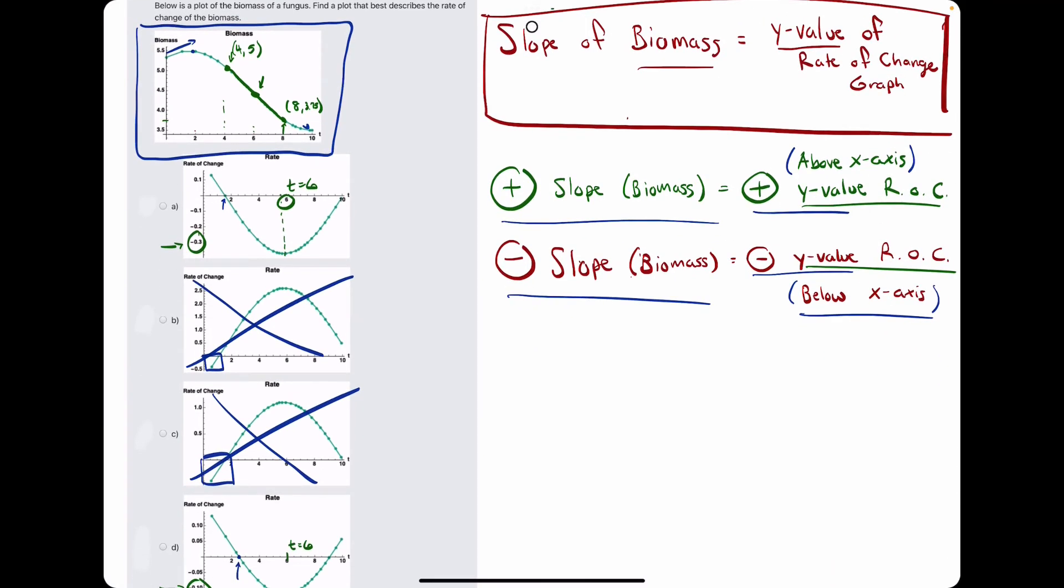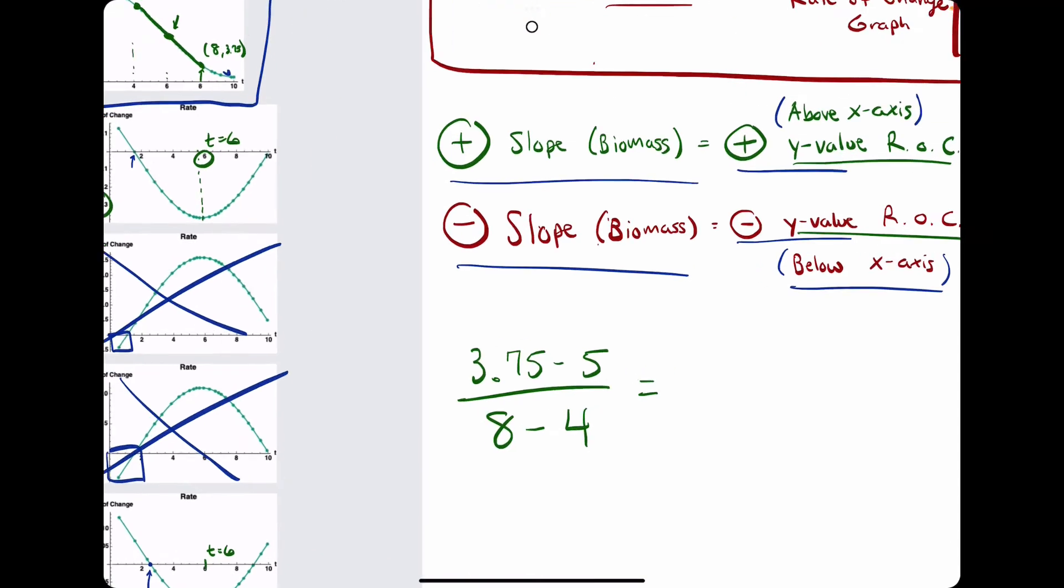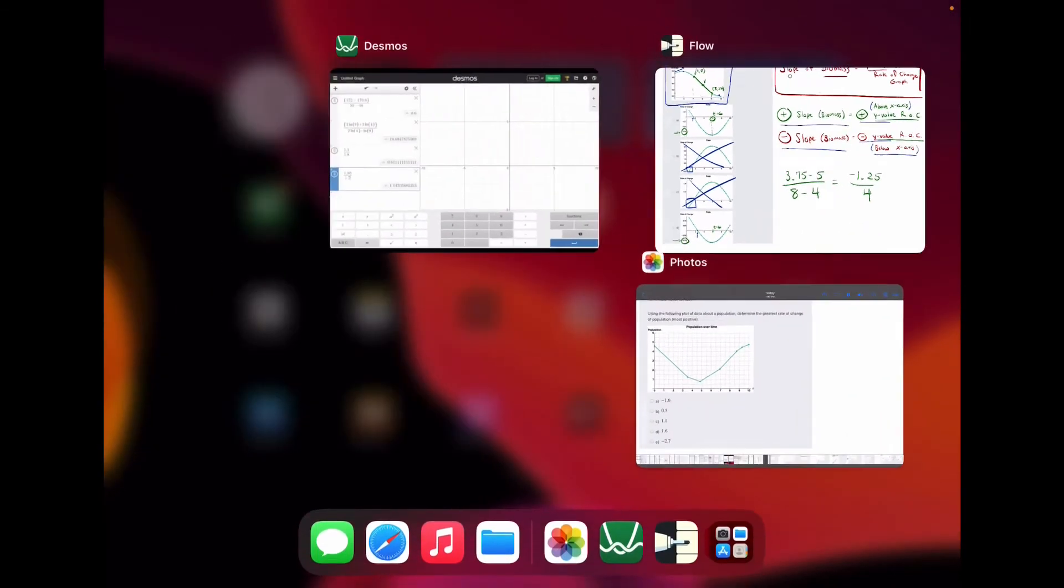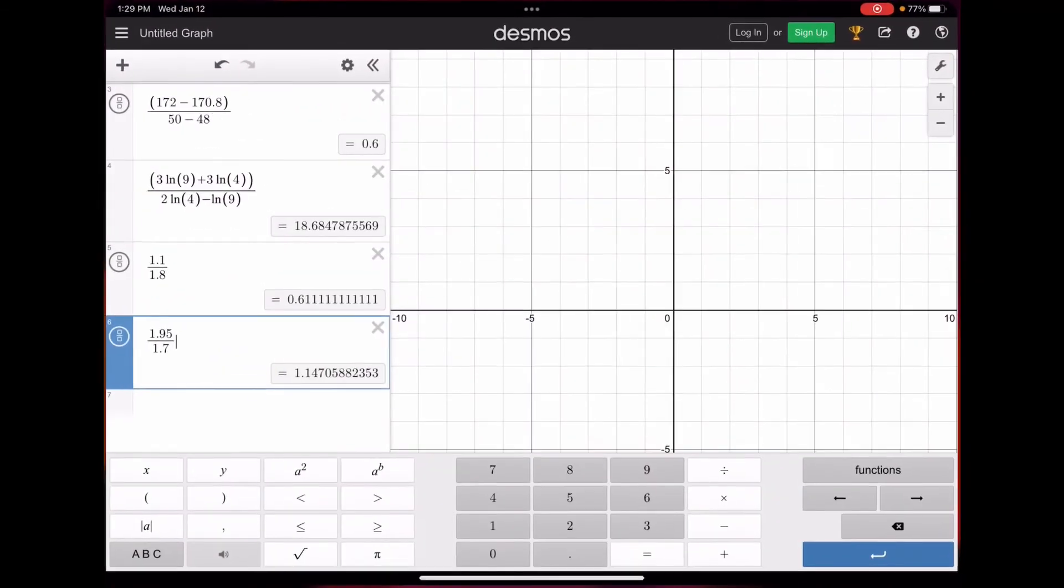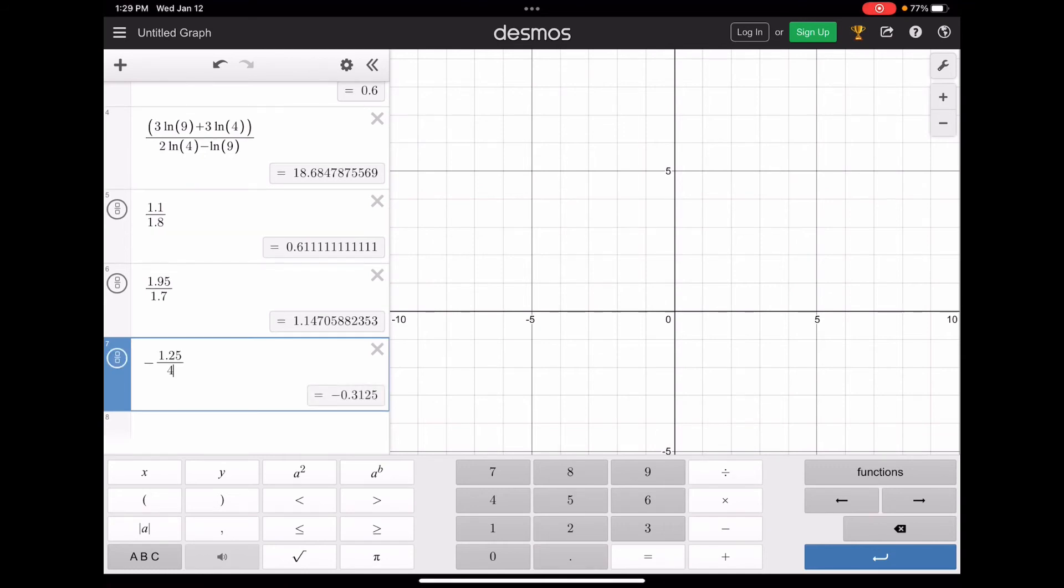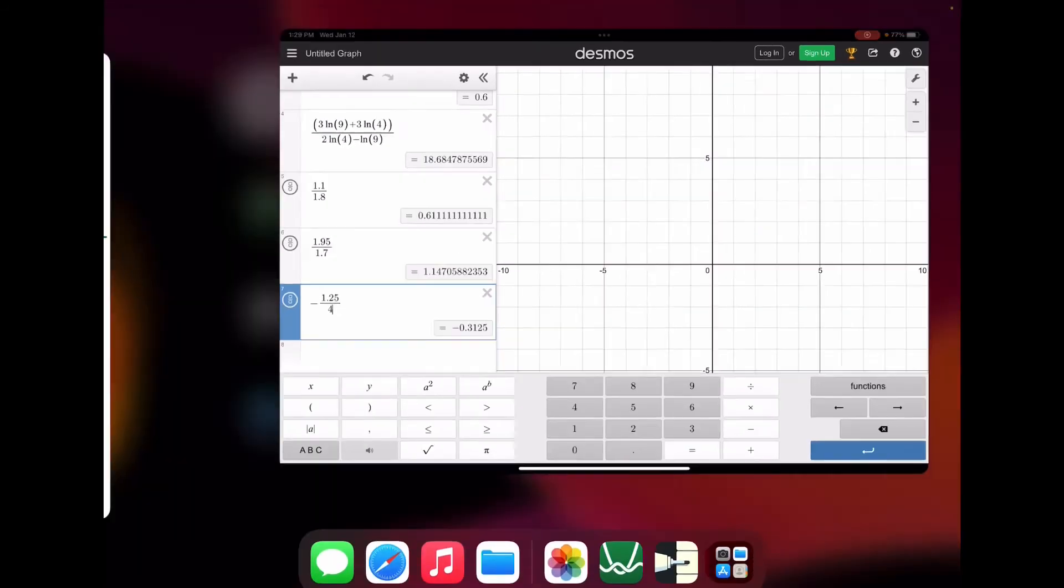So, we're going to find the slope between those two points by doing y2, 3.75 minus y1, 5, and dividing by the change in x values, 8 minus 4. So, 3.75 minus 5 would be negative 1.25, and then we're dividing by 4. So, let's break out desmos. Negative 1.25 divided by 4, that gives us about negative 0.31.